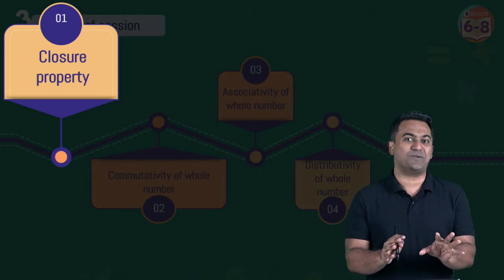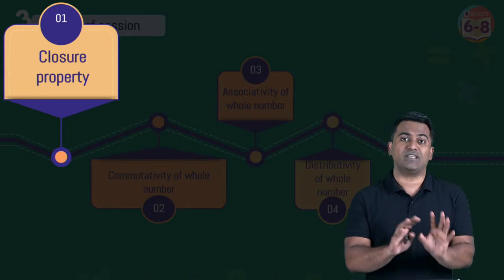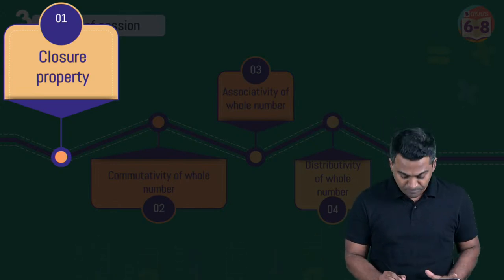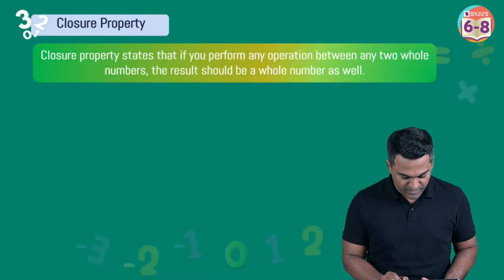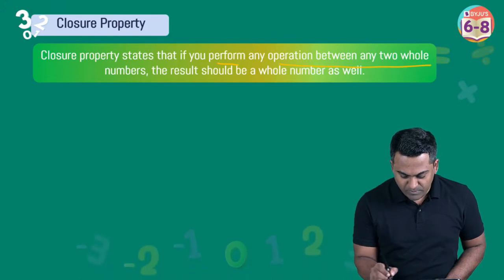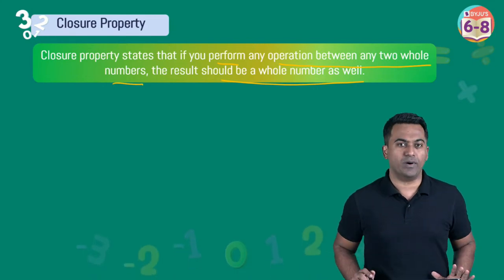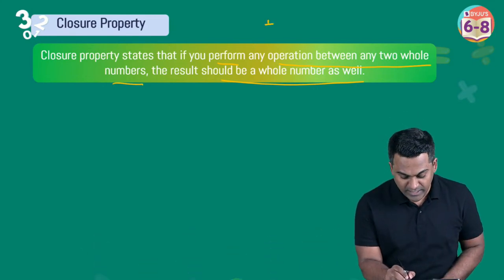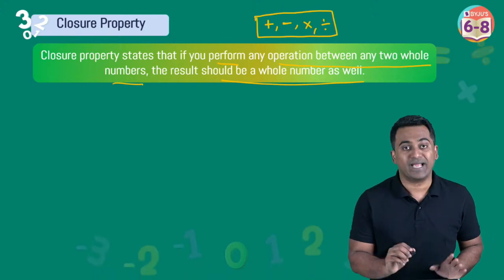Make sure you have some paper and a pen or pencil, because there will be things worth noting down for revision later. The closure property is a simple property which states that if you perform any operation between any two whole numbers, the result should be a whole number. The four operations we'll look at are addition, subtraction, multiplication, and division.